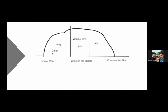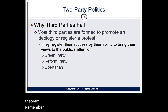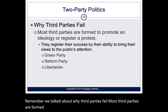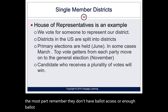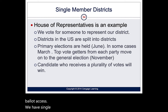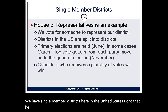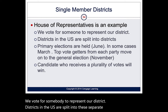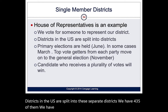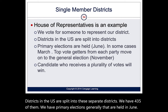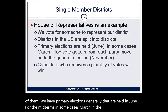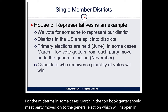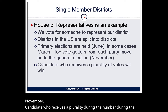Most third parties are formed to promote an ideology or protest and lack sufficient ballot access. We have single-member districts here in the United States — the House of Representatives is an example where we vote for someone to represent our district. There are 435 districts. Primaries are held generally in June for midterms, sometimes in March. The top vote getters from each party advance to the general election in November, and the candidate who receives a plurality wins.